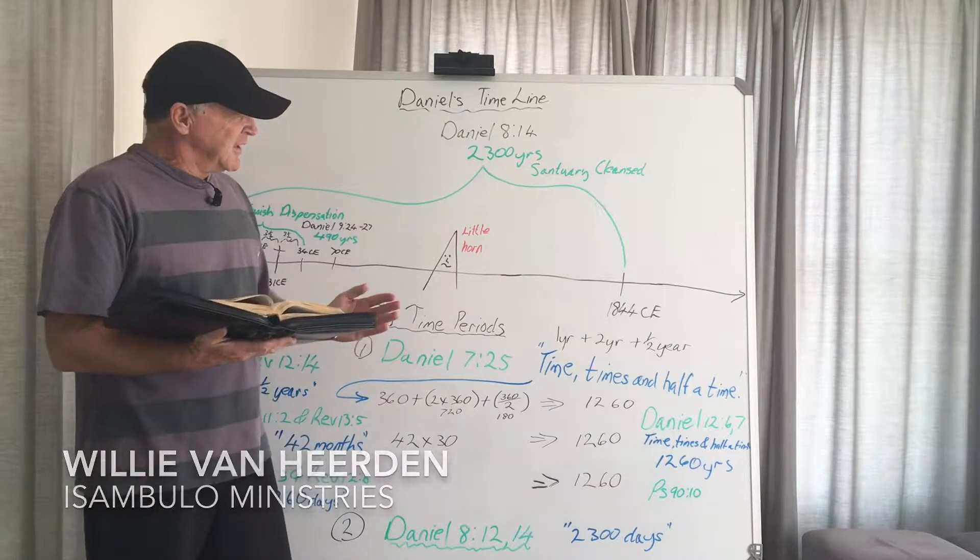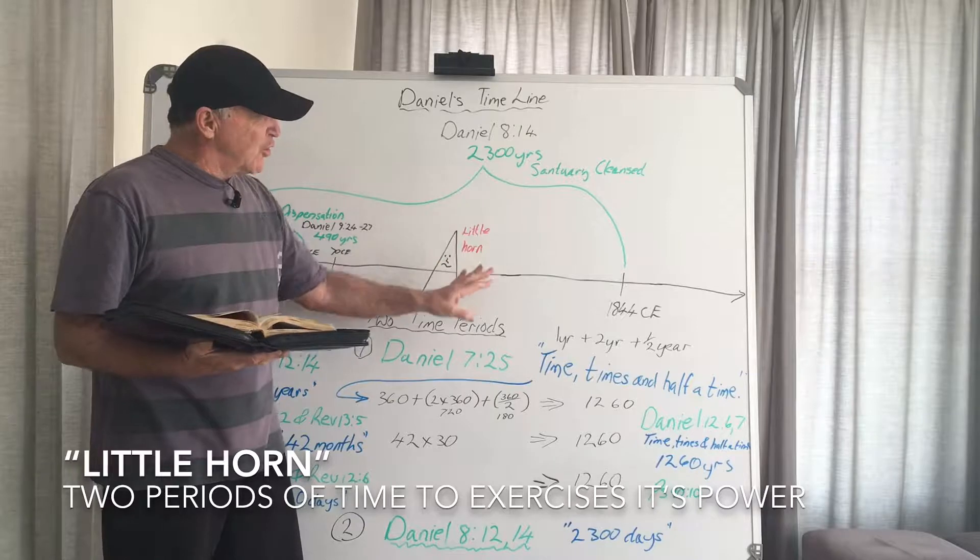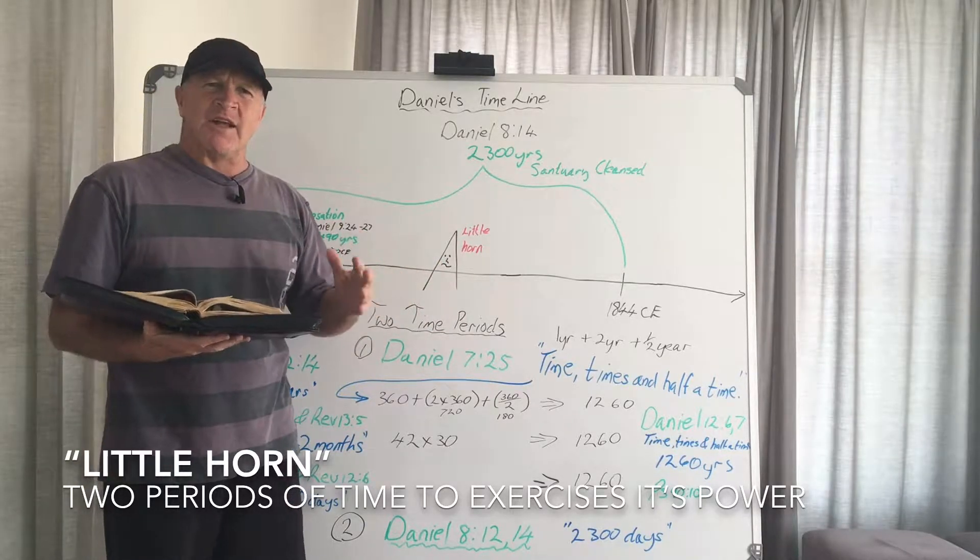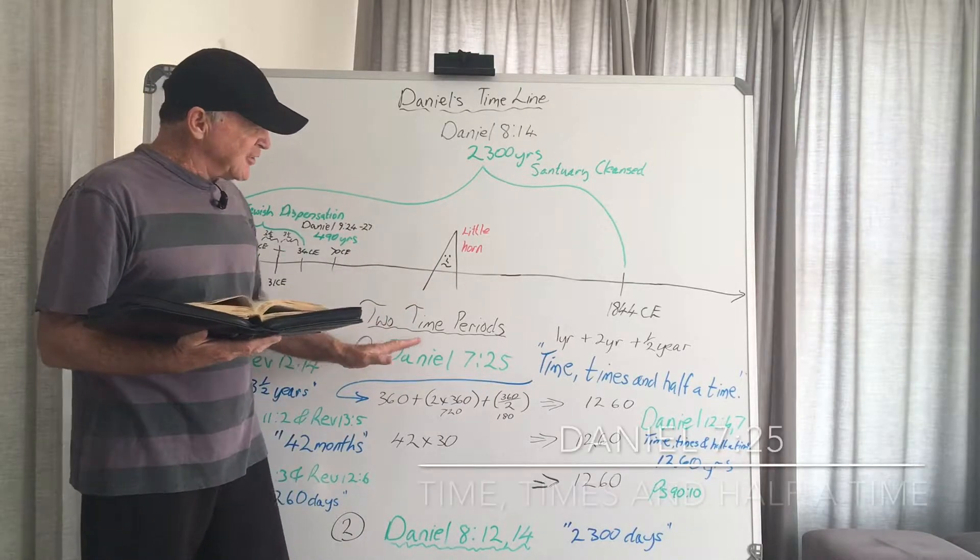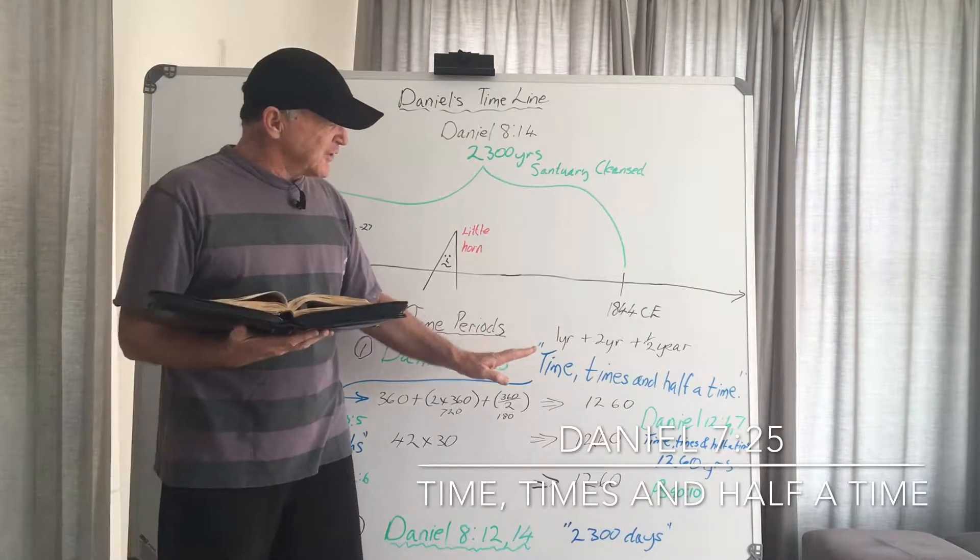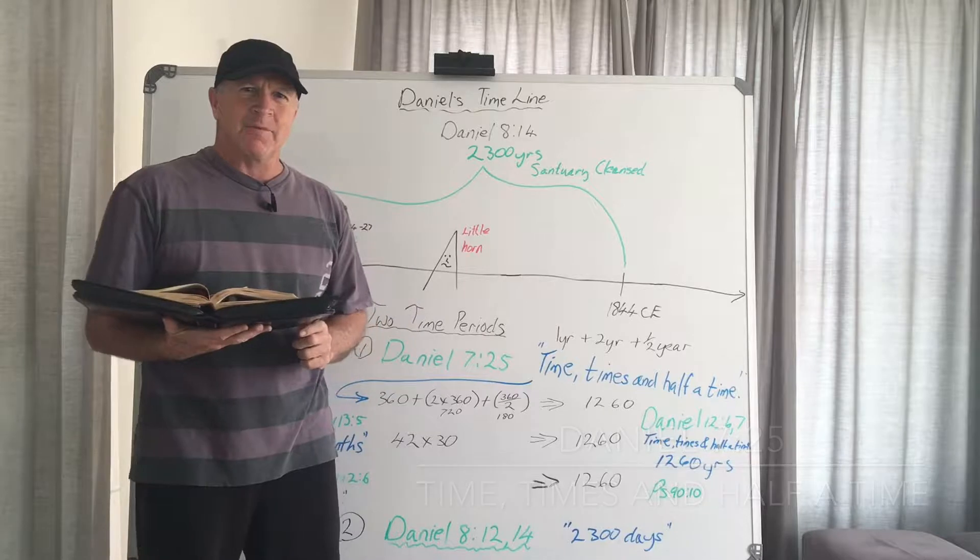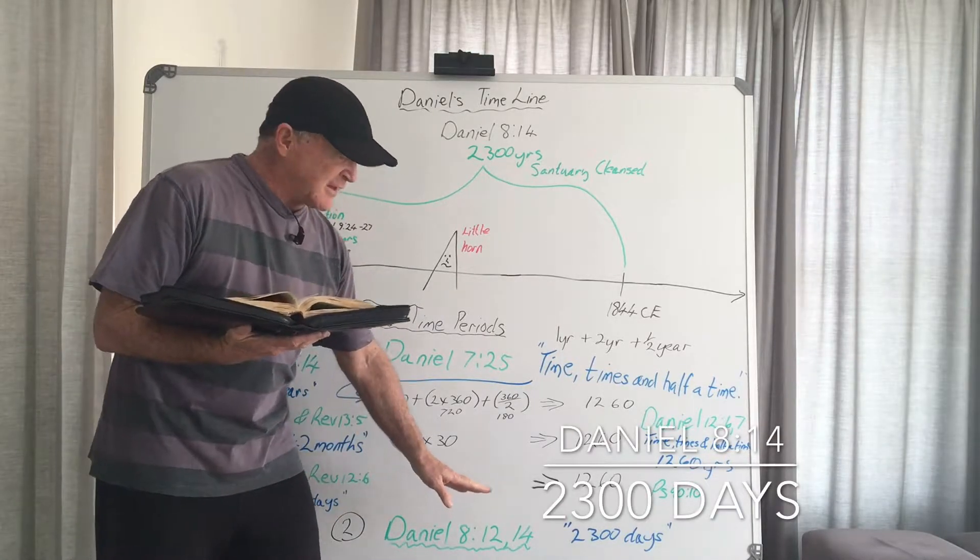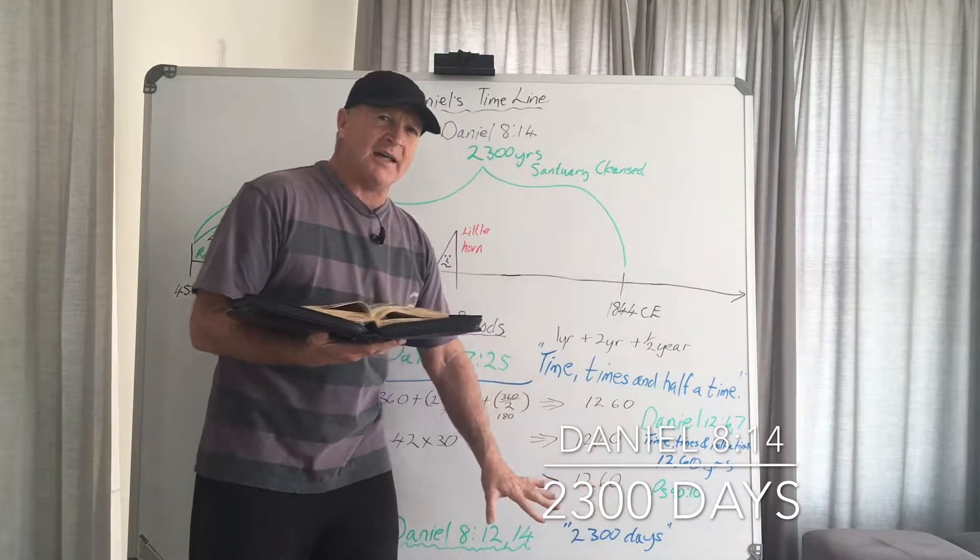Yesterday we discovered that God has advised us that this little horn had two periods of time in which it was going to exercise its power. We discovered in Daniel chapter 7 verse 25 that the first period was for a time, times and a half a time. We then also saw in Daniel chapter 8 verse 14 that this period of time would also be 2,300 days.